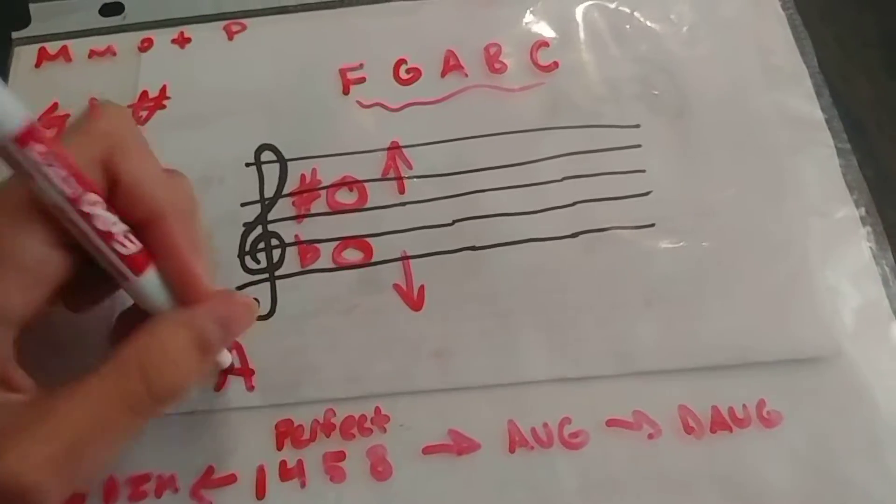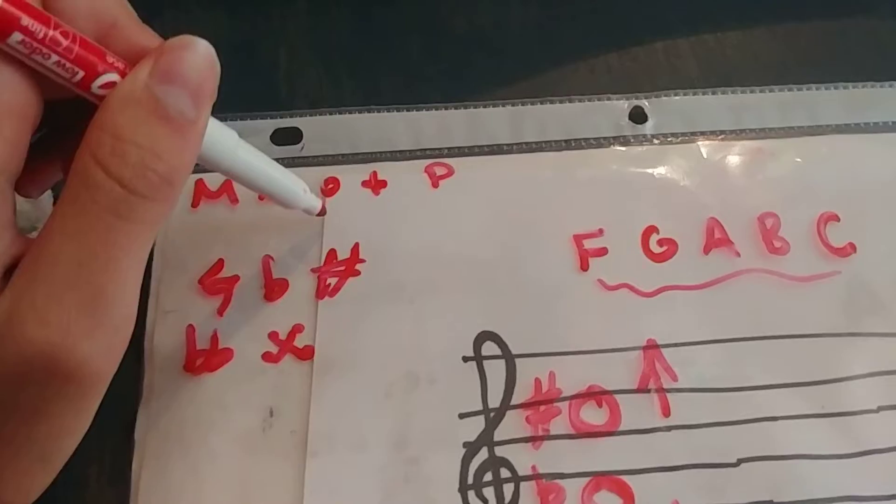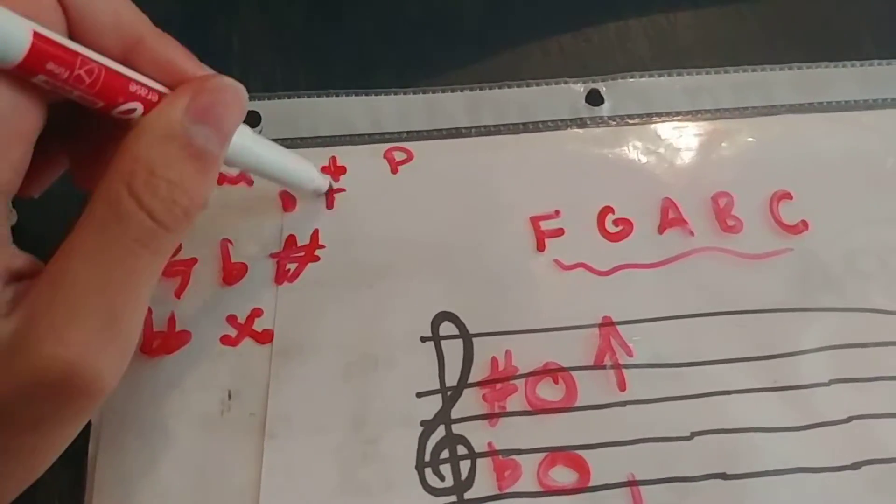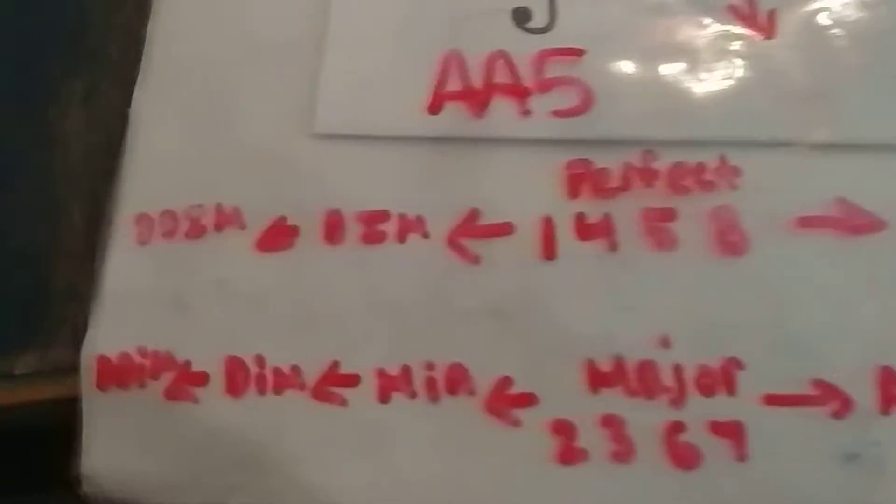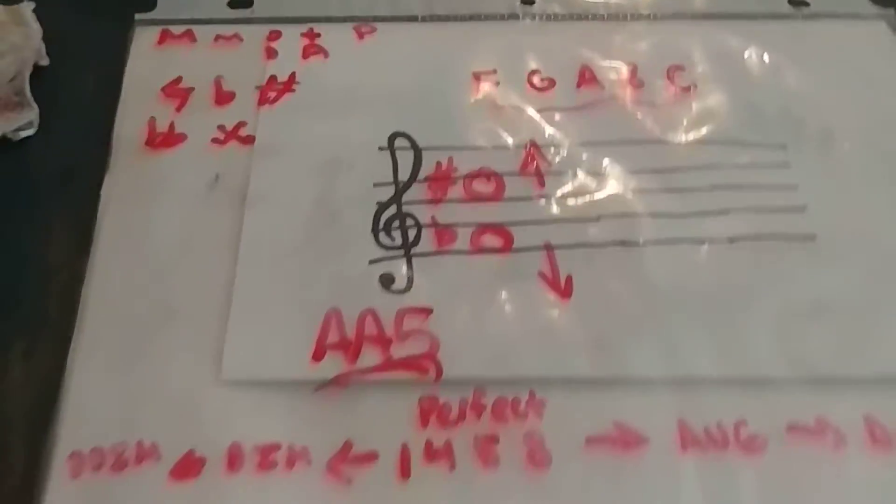So, the F flat makes it lower. The C sharp makes it higher. So, that is two times, so it is doubly augmented. So, it is doubly augmented. We could just say AA5. Because you don't always use, you can also say D or A for those as well. So, we'll just say AA5 for this. That is the interval.